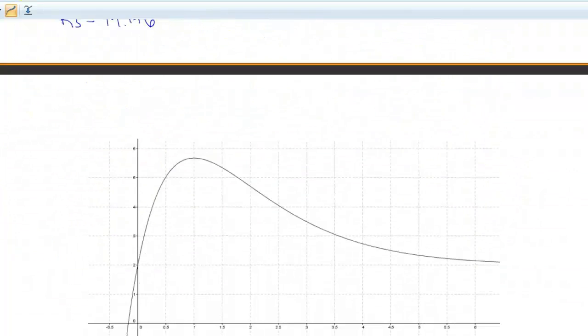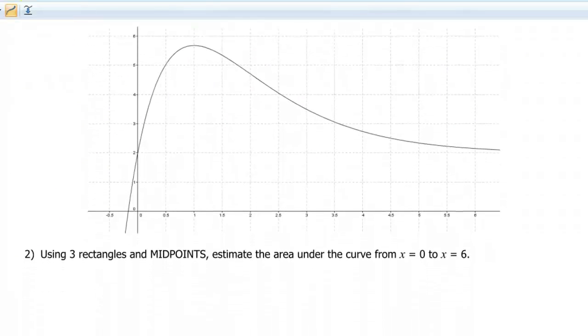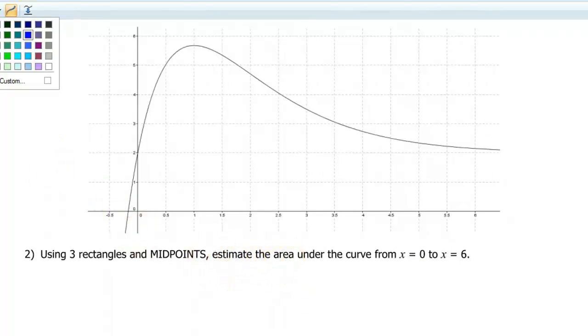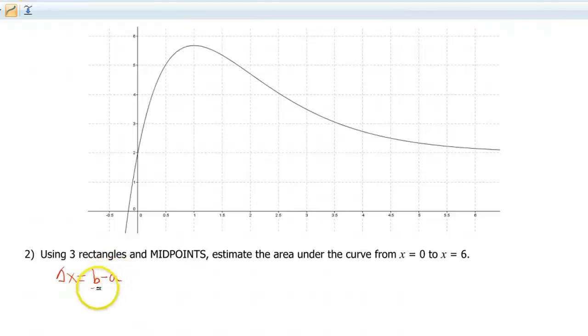All right, so speaking of midpoint, I went ahead and drew a new graph here for us. And now we're going to be doing the midpoints of these endpoints. We're still going to be doing the same thing with our delta x, so we're still going to do b minus a over n. So that's still going to be 6 minus 0 over 3, which gives us a width of 2. So we got 2, 4, and 6.